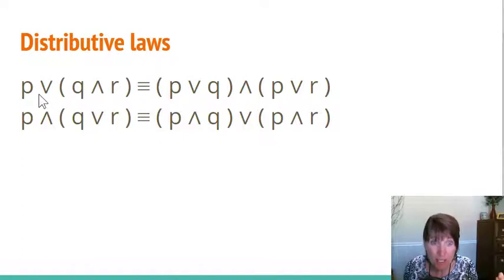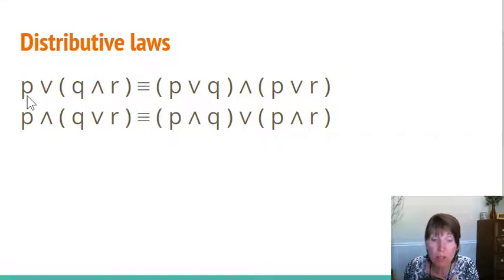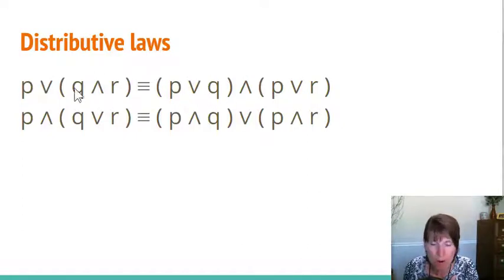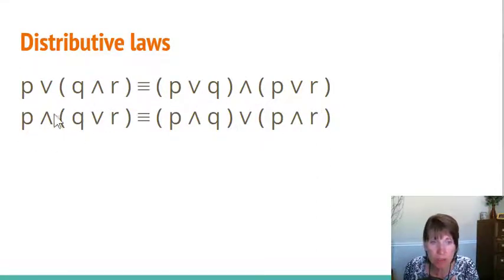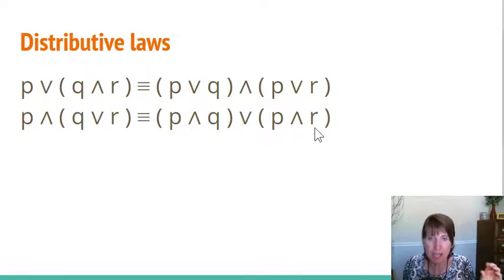The distributive laws allow you to distribute an AND or OR operation. For example, P OR (Q AND R) — you can distribute the P OR into the parentheses: P OR Q, then AND with P OR R. When you distribute, you take the P OR and apply it to each term inside, keeping the AND between them. Similarly, P AND (Q OR R) distributes to (P AND Q) OR (P AND R). You're just distributing inside the parentheses.